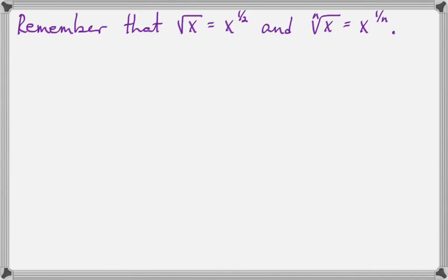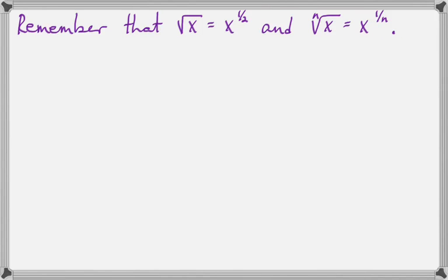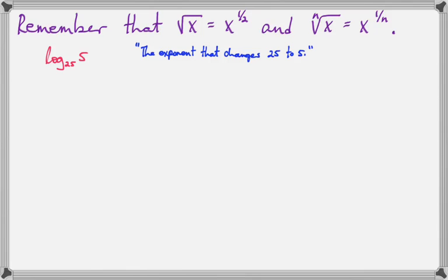Remember from earlier when we talked about rational exponents and found out that the square root of x is x to the 1/2. For any index, the exponent will become 1 over that index. So the nth root of x equals x to the 1/n power. We can use that with logarithms now. So we can work problems like log base 25 of 5. This would be the exponent that changes 25 into 5. We know the square root of 25 is 5, so we need the square root power, which is 1/2. So log base 25 of 5 is 1/2.